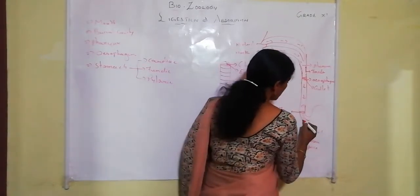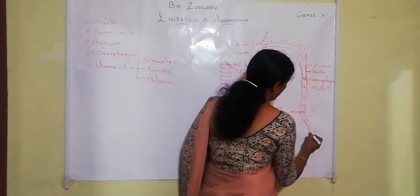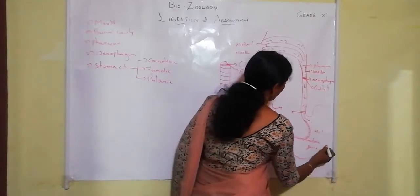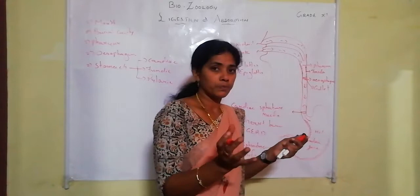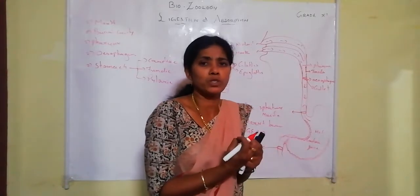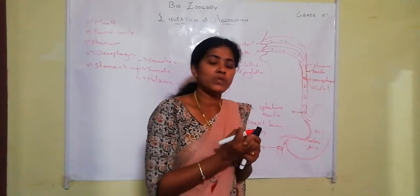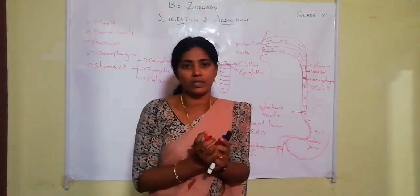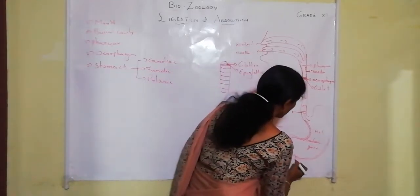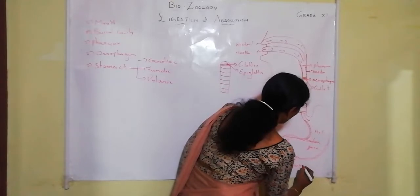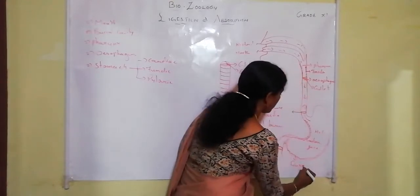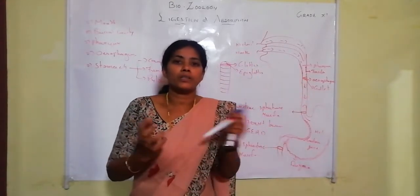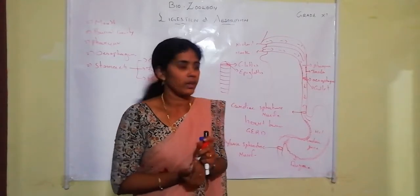The wall of the stomach consists of muscular folds that enlarge when food enters, allowing the stomach to accommodate large amounts of food. These folds are known as rugae.